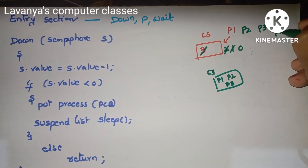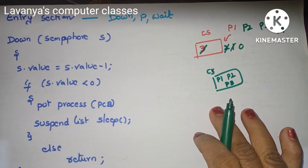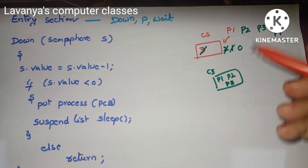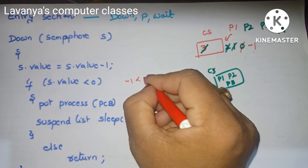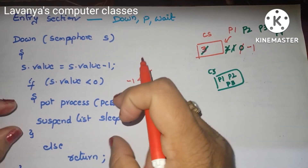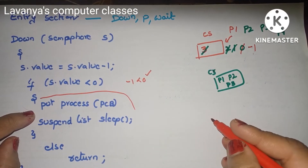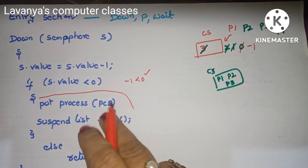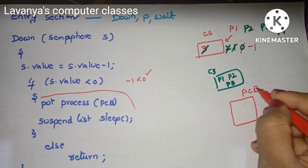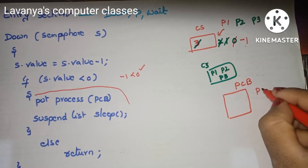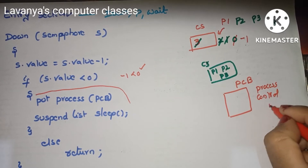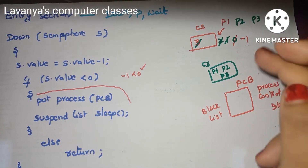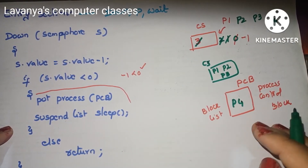Now P4 also wants to enter the critical section. Applying the same algorithm: S value is 0, so 0 minus 1 equals minus 1. Is minus 1 less than 0? Yes. So we execute the block code — put the process in the PCB, which is the Process Control Block, also called the block list. P4 is kept in sleep state since it cannot enter the critical section.